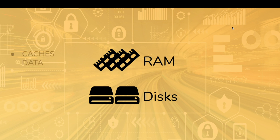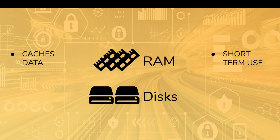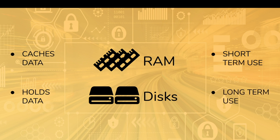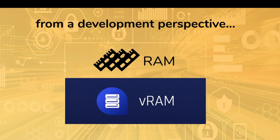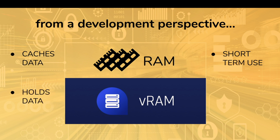With a traditional computer and its RAM and disks, RAM is used to cache data — the data is stored on disks but cached in RAM when we're working with it. If you're viewing a video, editing a file, or running a program, that active data is cached in RAM because we know we'll need it in the near future. Meanwhile, disks hold data for long-term use. The basic idea is you use faster tiers of the storage hierarchy to cache data from slower tiers. That's exactly what we're doing from a development perspective — RAM is caching data, as it's supposed to, and VRAM is holding the data.